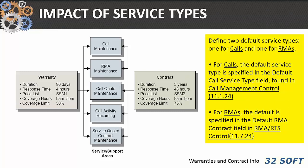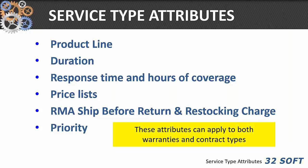The impact of service types is ubiquitous in the service support module — warranties, calls, RMA, quotes, call activity, service quote maintenance, contracts. You set up these service types, one for calls and one for RMAs. In call management control 11124, you define what kind of service type is for calls. For RMA functionality, covered in September, you go into 11724 and define that service. Service types — both warranties and contracts — have various attributes associated with the product line: duration, response time, price lists, how you treat RMAs, priorities.